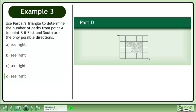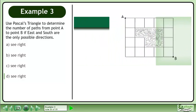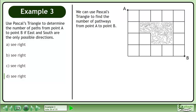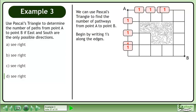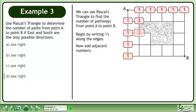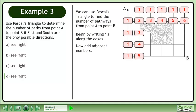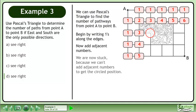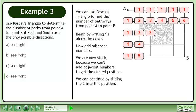Now we'll move on to part D. We can use Pascal's triangle to find the number of pathways from point A to point B. Begin by writing ones along the edges. Now add adjacent numbers. We are now stuck because we can't add adjacent numbers to get the circled position.